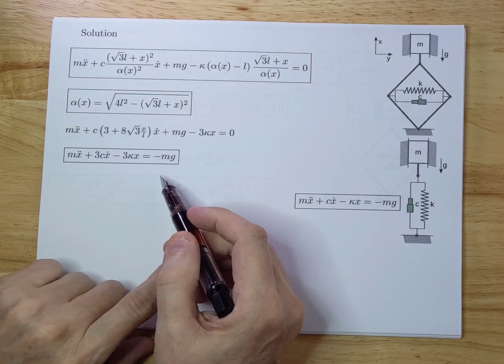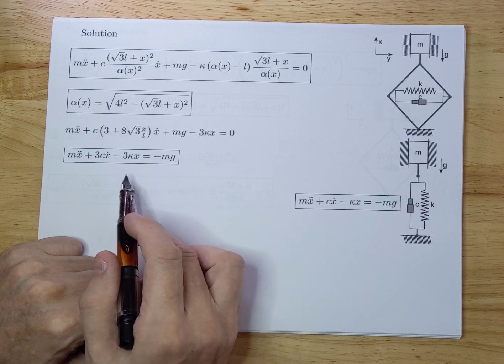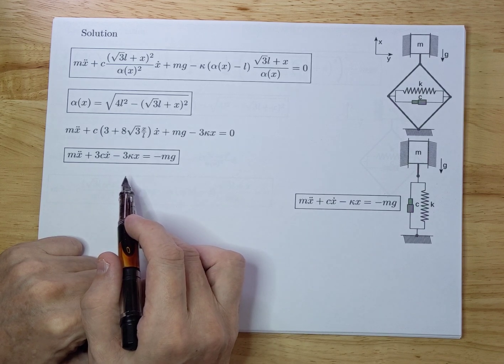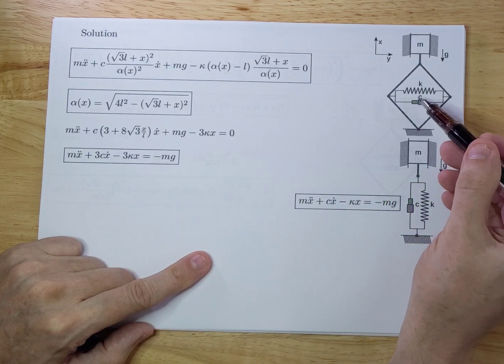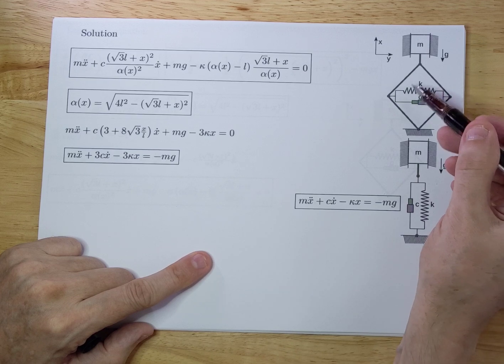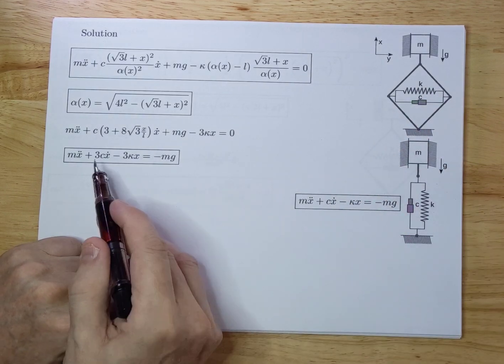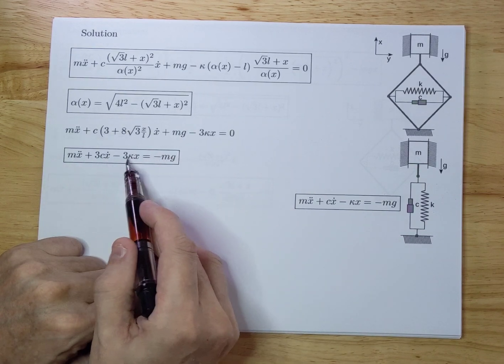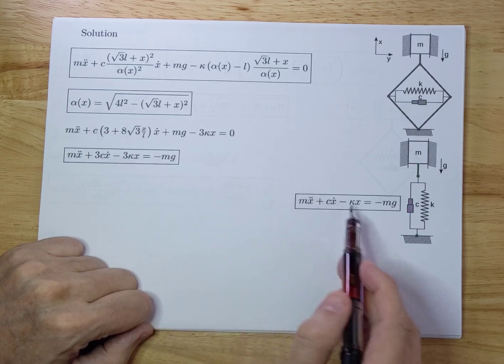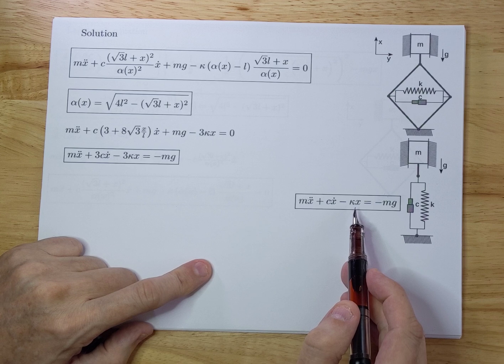That happens a lot in practice, in practical systems. You can do this, for instance, to save cost. If it is very expensive to buy a certain damper with a certain C value or a spring with a certain k value, and you need quite a high value, you can say, okay, I'm going to make a construction like this, because here the C's and the k's essentially are three times as big as here. That could be beneficial in certain cases.